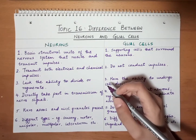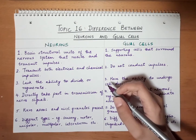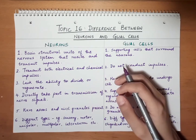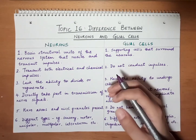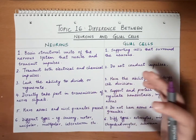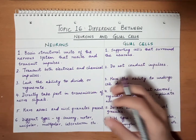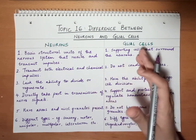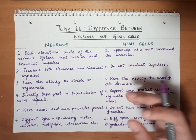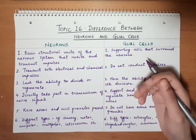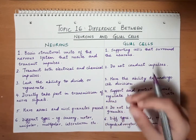Hello everyone, welcome back to Easy Neuro. Today we will be discussing the differences between neurons and glial cells. We have already discussed in the previous video about what neurons are and what other types of glial cells there are and their functions. Today we will be focusing on the basics which can be asked in exams — what are the differences between neurons and glial cells. So let's begin.